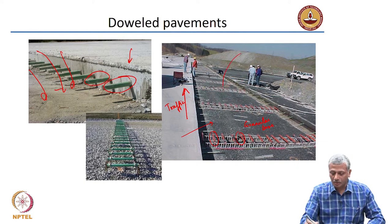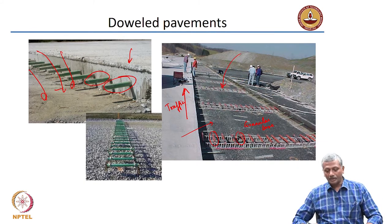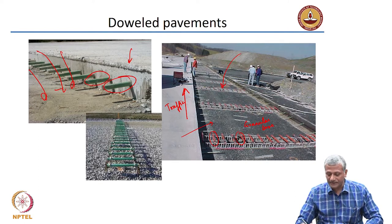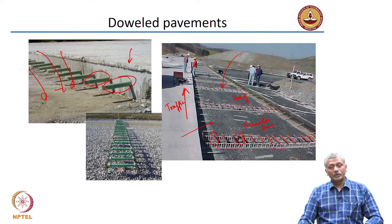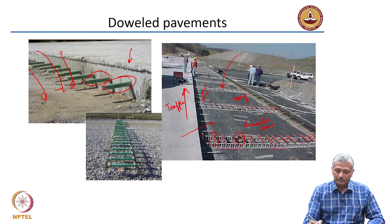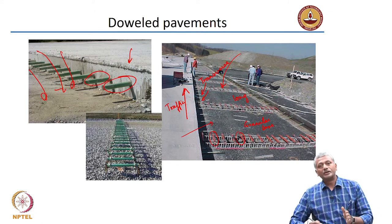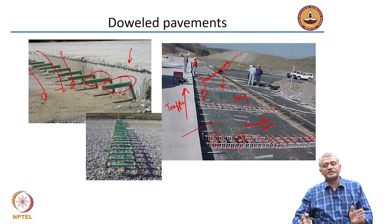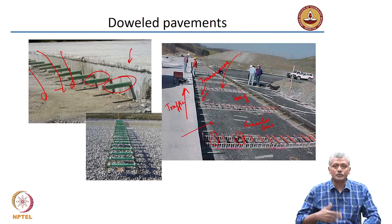Then they will be putting the concrete on top, filling up the concrete on the top. Dowels are provided to connect the slabs in the longitudinal direction. Dowels are also provided to connect the slabs in the transverse direction. So both ways there is good load transfer between one slab to the next. That is the use of a dowel in pavement.